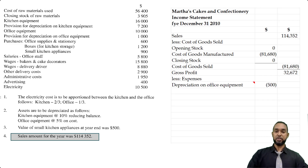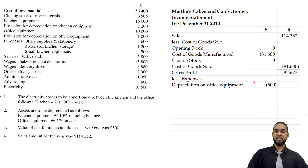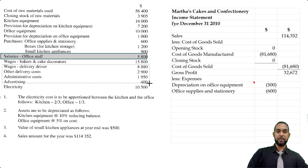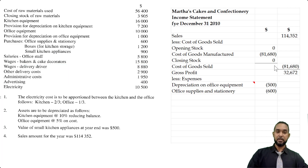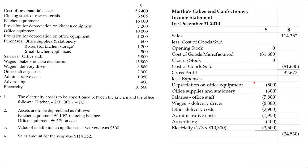From gross profit we subtract expenses. Depreciation on office equipment: note 2 says 5% on cost, straight-line method; cost is $10,000, so depreciation is $500. Office supplies and stationery go here since they're office-related, not manufacturing. Then salaries of office staff — $5,800. Delivery driver wages — $8,880. Other delivery costs — $2,900. Admin — $1,950. Advertising — $400. And one-third of electricity goes to admin: one-third of $10,005 is $3,335. Total expenses come to $24,530, giving us a net profit of $8,142.